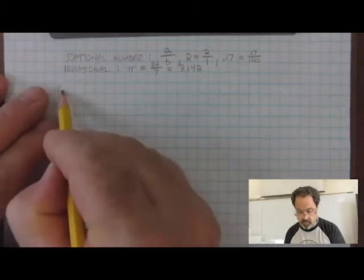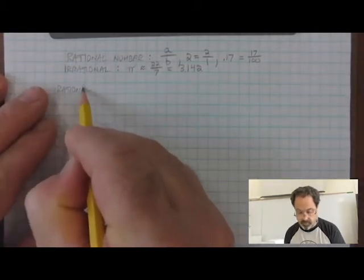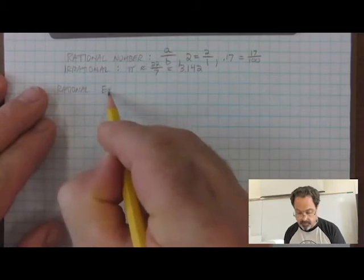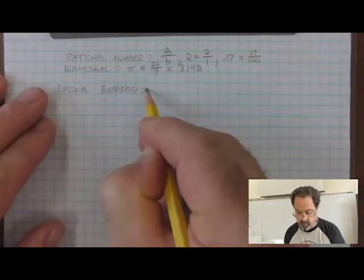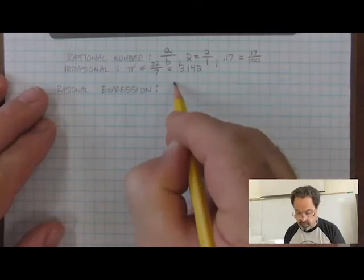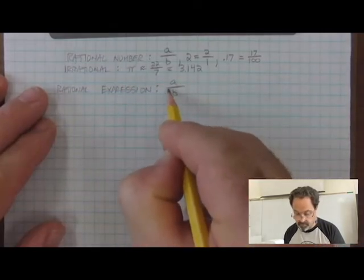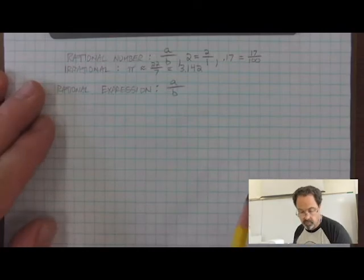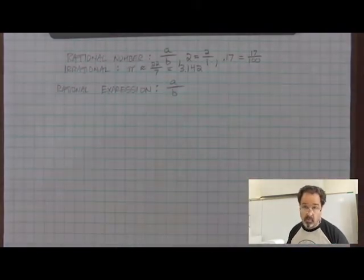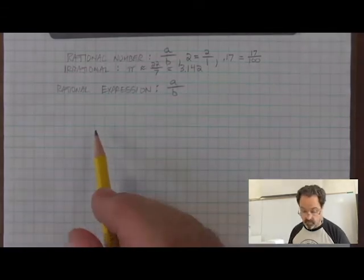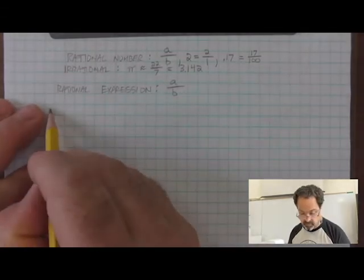So what's a rational expression? Rational expression is also one that can be expressed as a fraction. But we use this term rational expression when we mean that the parts a and b are more complicated than numbers. They are algebraic expressions themselves.